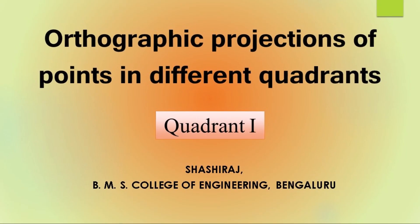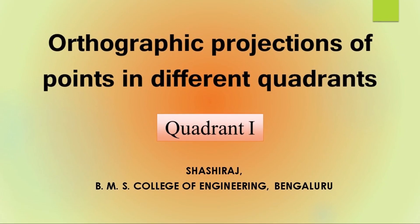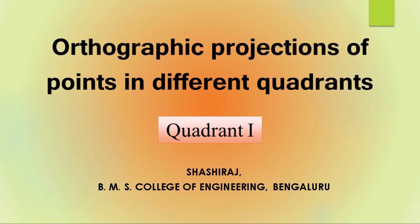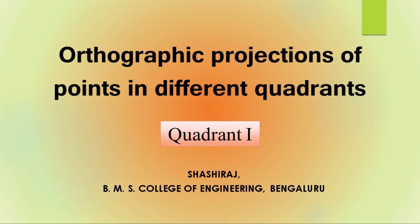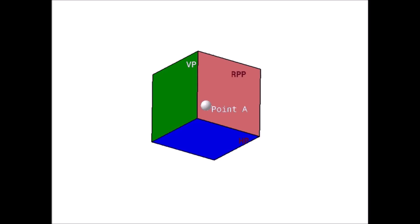Hello, in this video let us visualize a point object in the first quadrant. Consider a point A in the space above the horizontal plane and in front of the vertical plane, that is in the first quadrant as shown. For better visualization here, the point A is represented as a sphere.